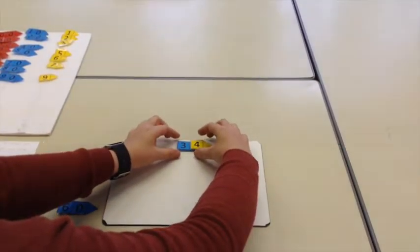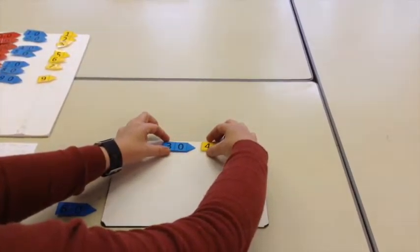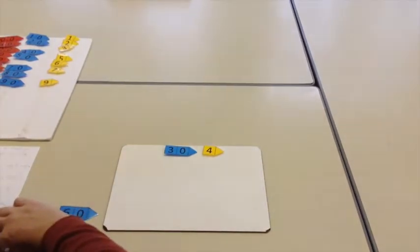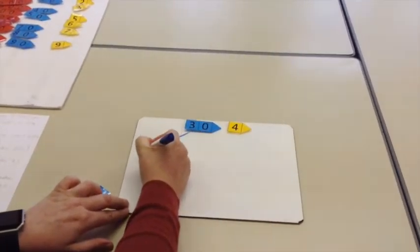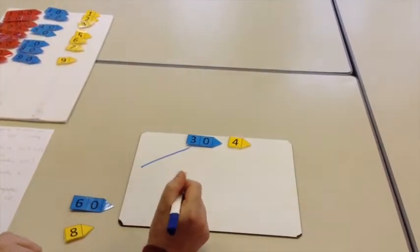First, you separate the number into tens and units. Then you double the 30. Double 30 makes 60.